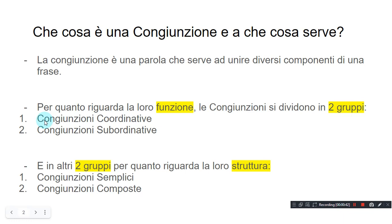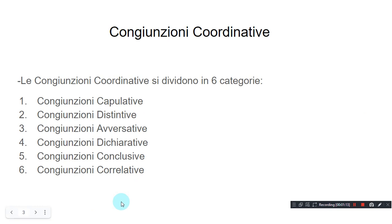In terms of their functions, the conjunctions divide into two groups: congiunzioni coordinative, coordinating conjunctions, and congiunzioni subordinative, subordinating conjunctions. And in terms of their structure, they divide into two categories again: congiunzioni semplici, simple conjunctions, and congiunzioni composte, compound conjunctions.